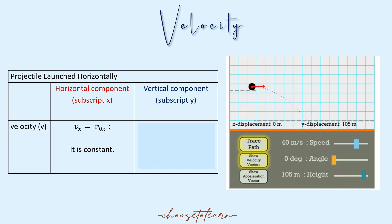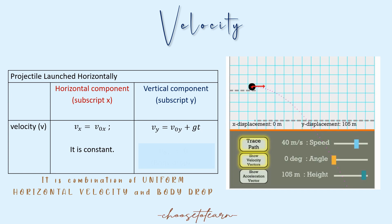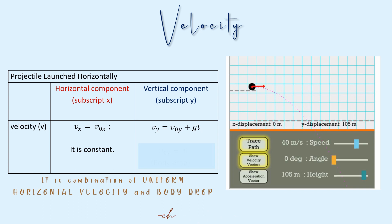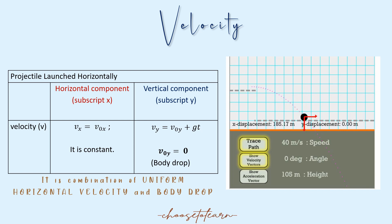For the vertical component, the velocity is changing. We use the formula: final vertical velocity equals initial vertical velocity plus acceleration due to gravity multiplied by time. For projectile launched horizontally, the initial vertical component is zero, because it is freefall — specifically body drop.